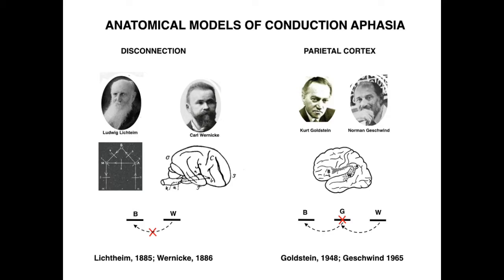With post-mortem imaging and CT imaging, the area that emerged as related to repetition deficits was the inferior parietal lobe. There was more and more evidence pointing towards the inferior parietal lobe being important for repetition. This was first put forward by Kurt Goldstein and revisited in modern neurology by Norman Geschwind. However, so far there is no consensus on where the lesion needs to strike for repetition deficits to occur.